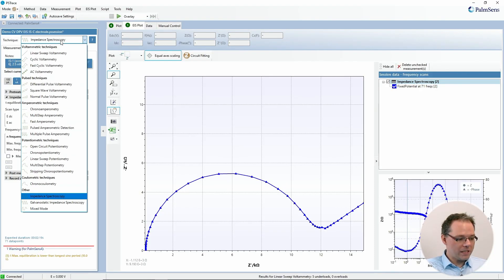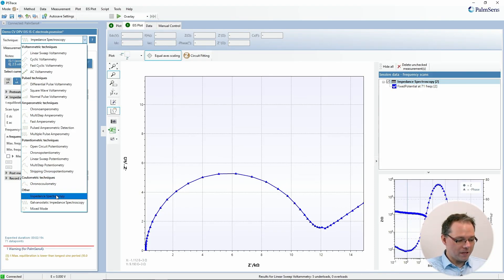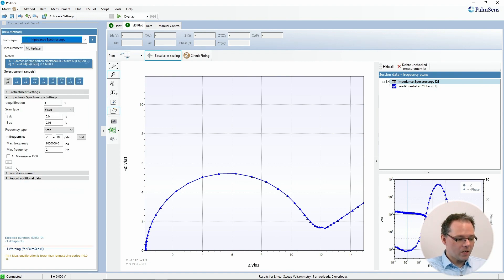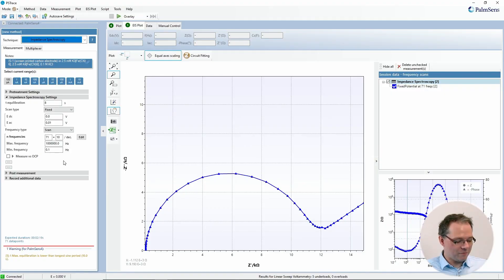In PSTrace you choose from the list of techniques impedance spectroscopy, and then you get this mask with all the parameters that you need to set for your impedance spectroscopy. To explain these parameters in more detail, I've prepared a few slides.